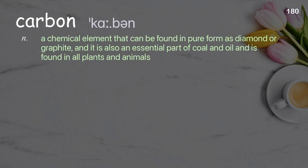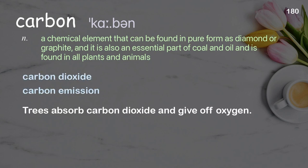Carbon: a chemical element that can be found in pure form as diamond or graphite, and is also an essential part of coal and oil, and is found in all plants and animals. Examples: Carbon dioxide. Carbon emission. Trees absorb carbon dioxide and give off oxygen.